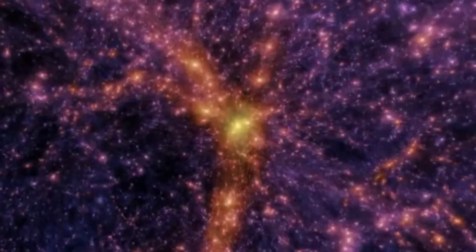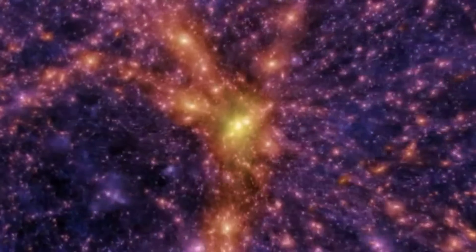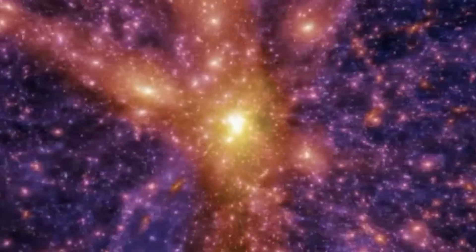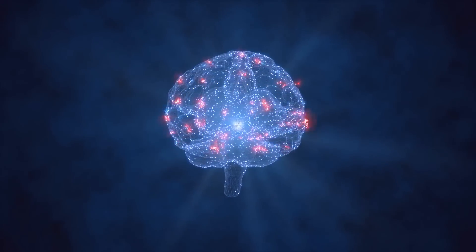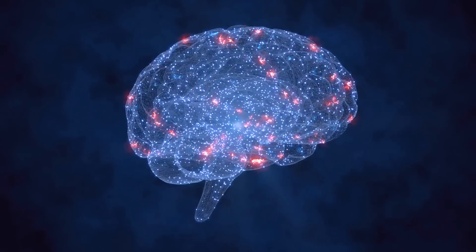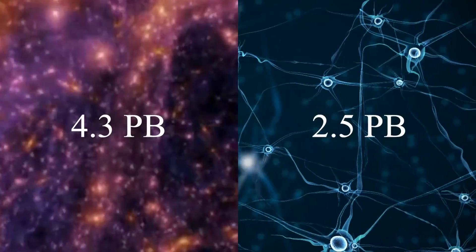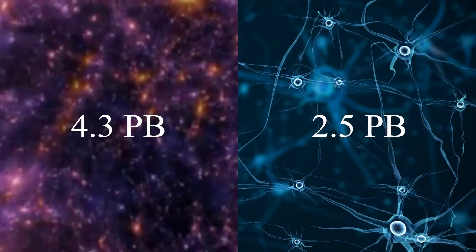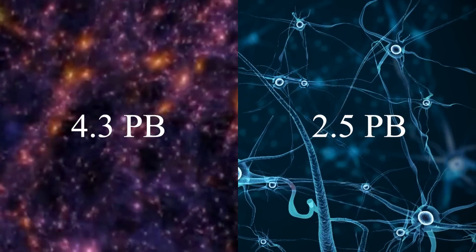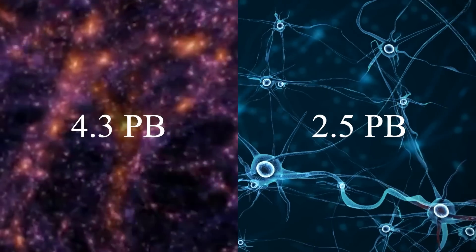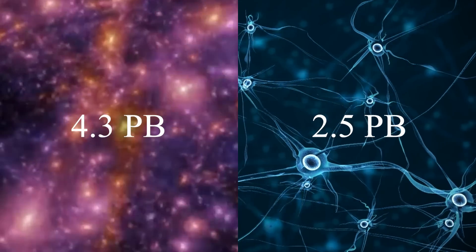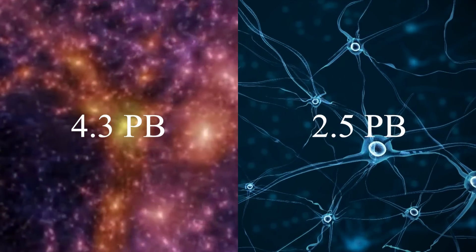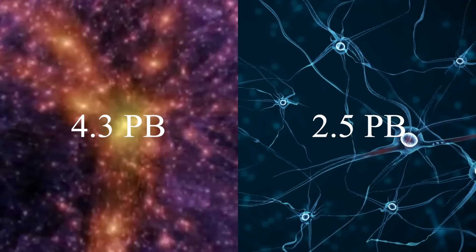Even more interestingly, if the entire cosmic web network were to be used to store information, we would be able to store approximately 4.3 petabytes of information. In contrast, the human brain can theoretically store 2.5 petabytes of information. 4.3 petabytes and 2.5 petabytes might first seem to be quite a difference. However, even a slight difference in the structure of the neuronal network of the brain can result in an exponential difference in the amount of information that can be stored. Therefore, the 2.5 petabytes of the brain and the 4.3 petabytes of the universe are actually extremely close.